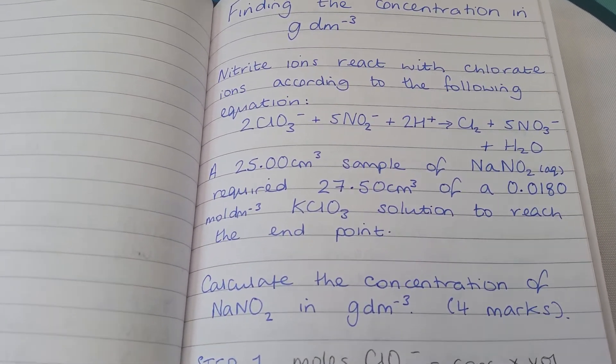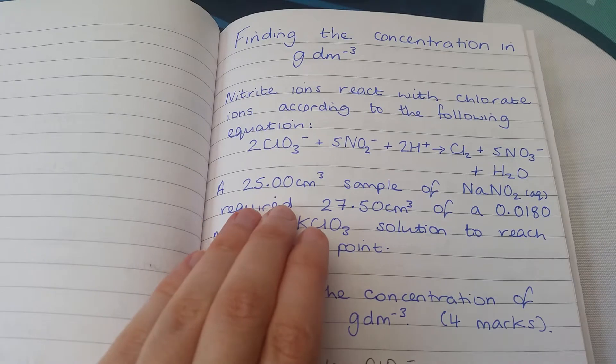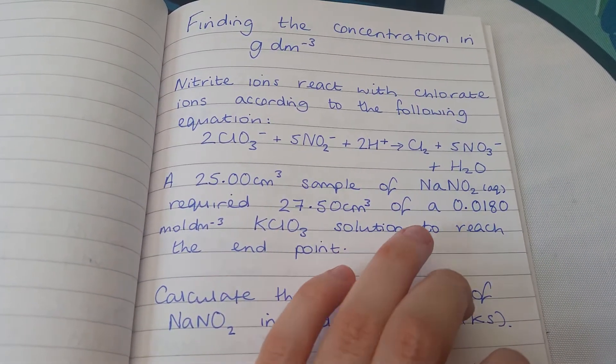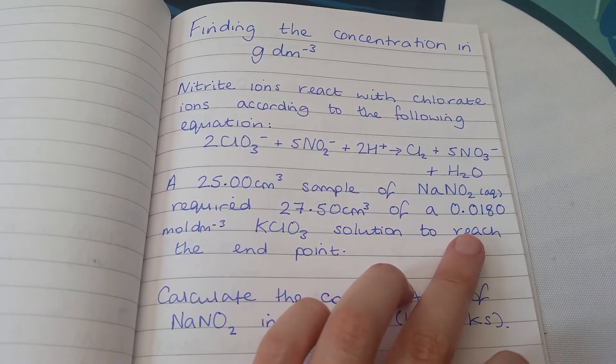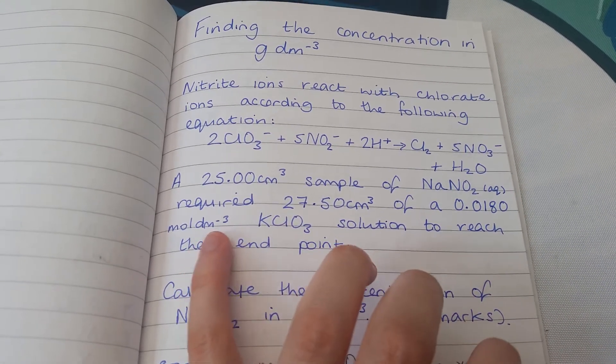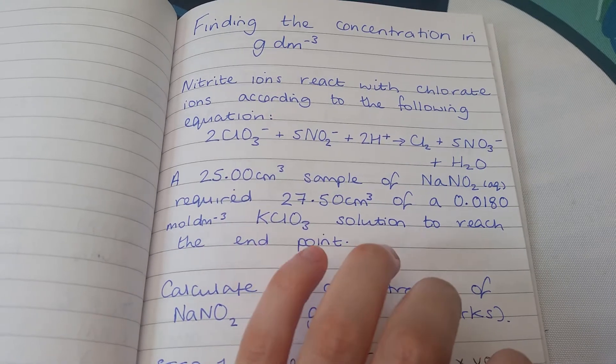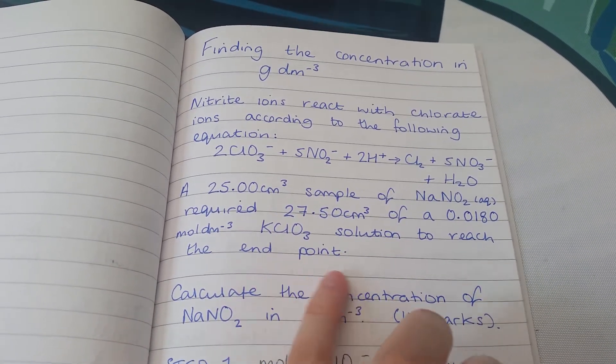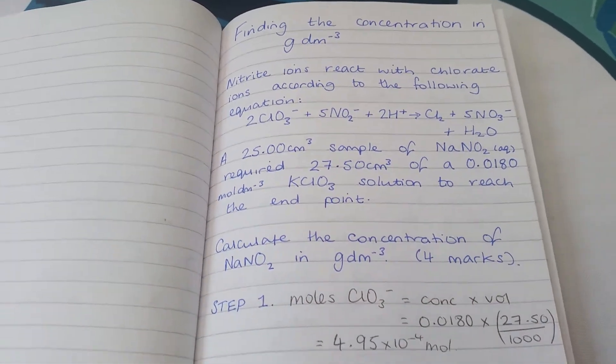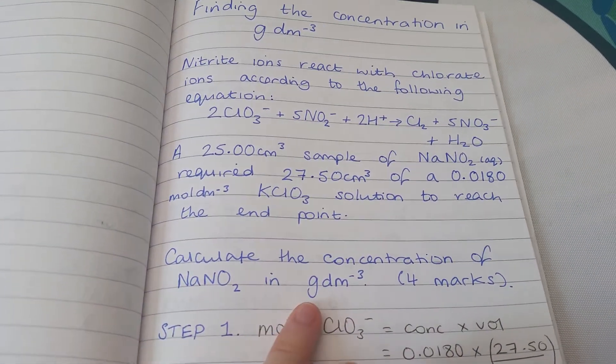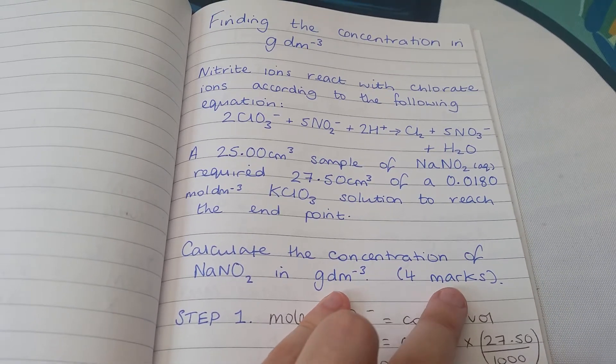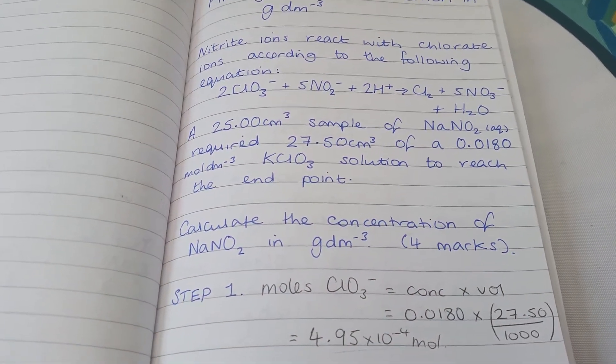Now onto the titration details. A 25 cm³ sample of sodium nitrite required 27.5 cm³ of a 0.018 mol/dm³ potassium chlorate solution to reach the end point, where the colour change happens and the reaction is complete. Calculate the concentration of sodium nitrite in g/dm³ - it's worth four marks, so it's about four steps.